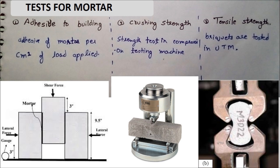Now coming to the tests of mortar. The first test is the adhesive to building material test. In this test, we make a rectangular block of 19 cm × 9 cm × 9 cm. We apply shear stress to this cubical block, and the maximum load it carries over an area of 81 cm² is called its adhesiveness in building material units.